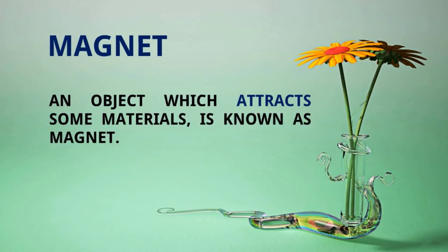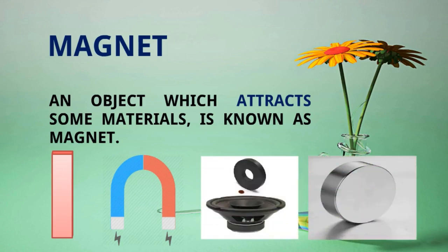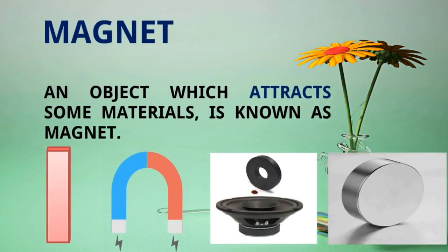It can be of different shapes. It can be bar type, it can be U shape, it can be ring type, it can be disc shape. But there is a very common phenomenon of all types of magnets: it has two poles, north pole denoted as N and south pole denoted as S.